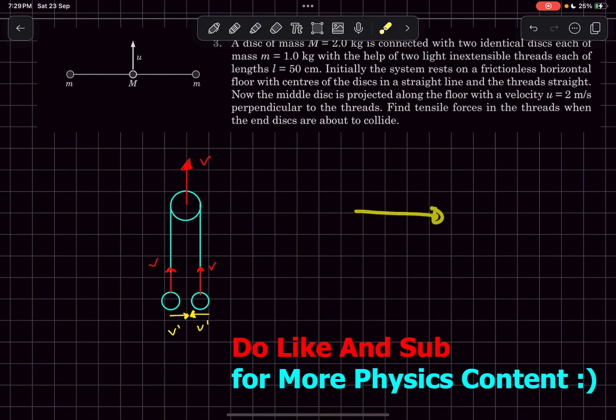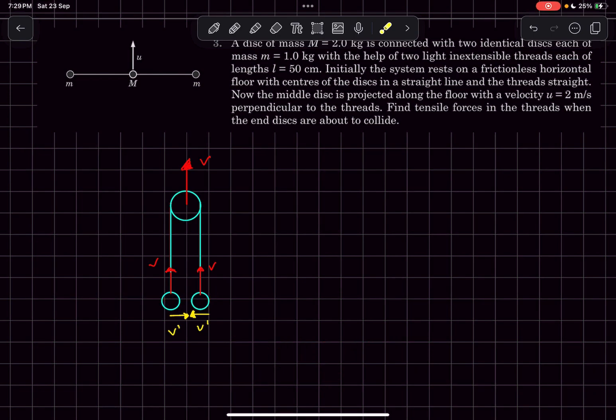The initial momentum in the x direction should be zero, which means finally also it should be zero. For that both these velocities must be the same, right, because the masses of each of these disks is the same.